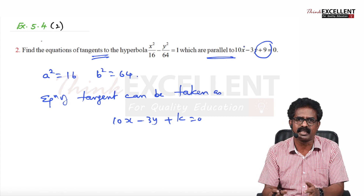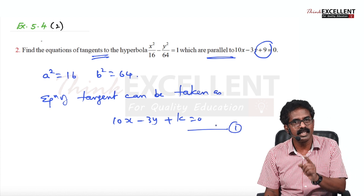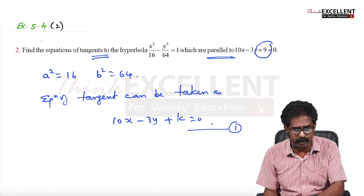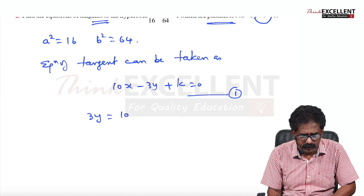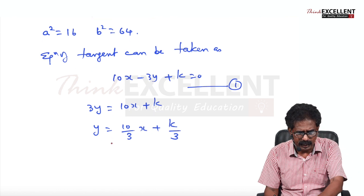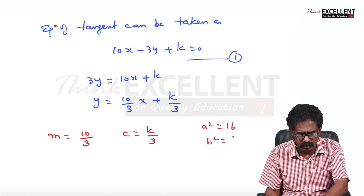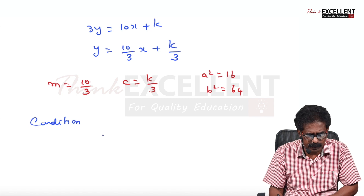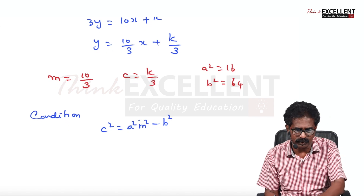We have to find k. Rewrite in slope-intercept form: 3y = 10x + k, so y = (10/3)x + k/3. This is of the form y = mx + c, where m = 10/3 and c = k/3. For a hyperbola, the condition is c² = A²m² - B². So (k/3)² = 16·(10/3)² - 64 = 1600/9 - 64. Taking LCM of 9: (1600 - 576)/9 = 1024/9. So k² = 1024, giving k = ±32.